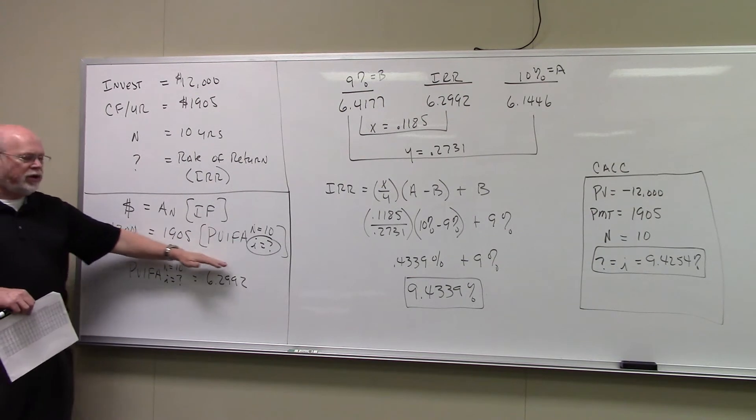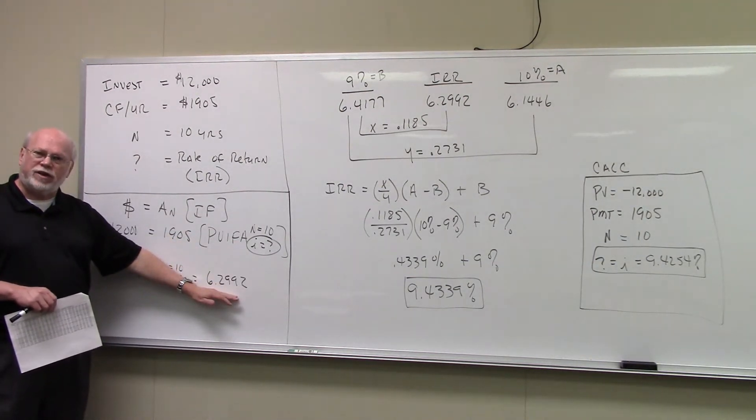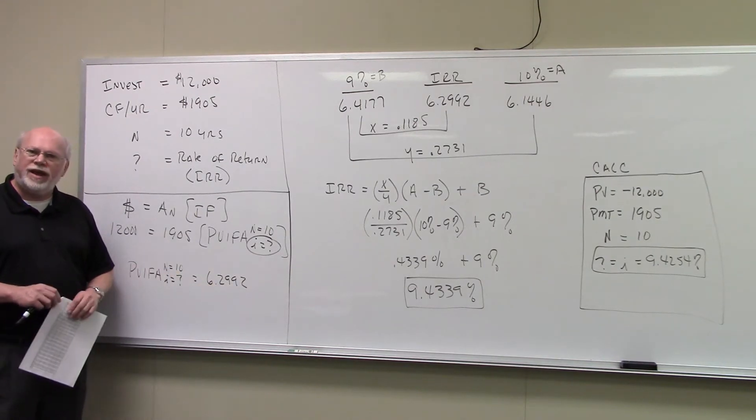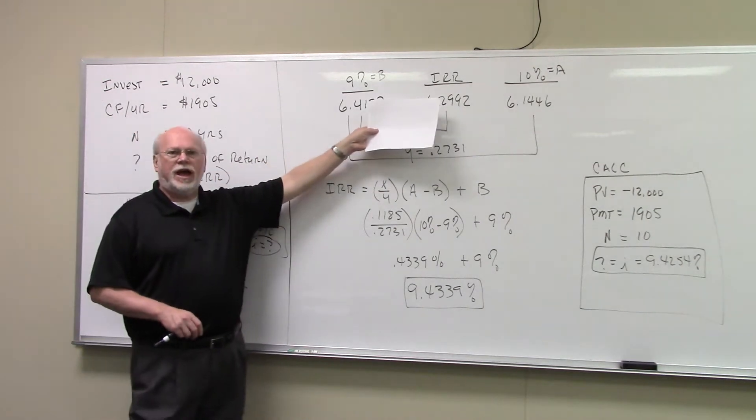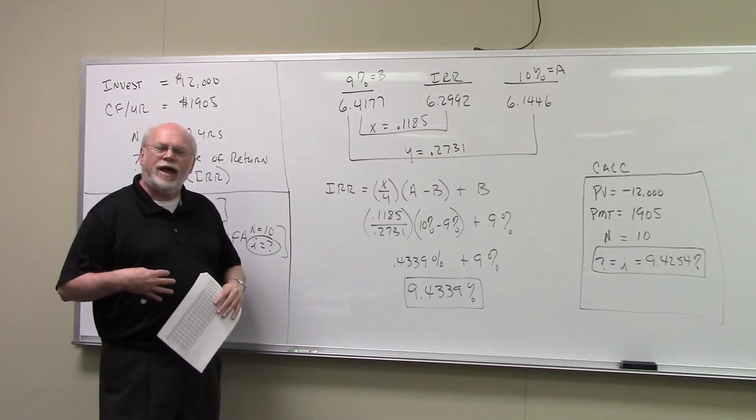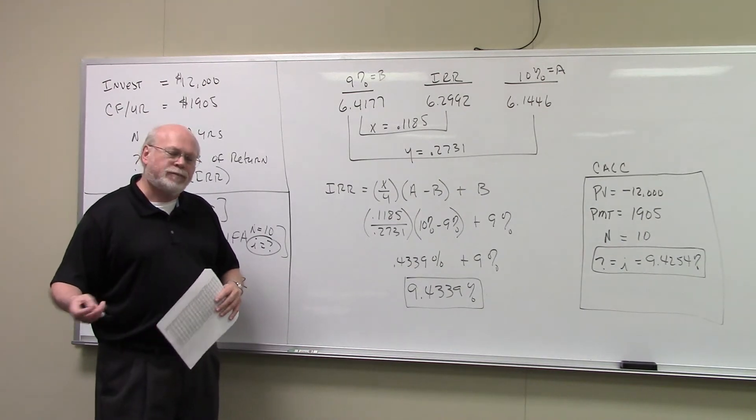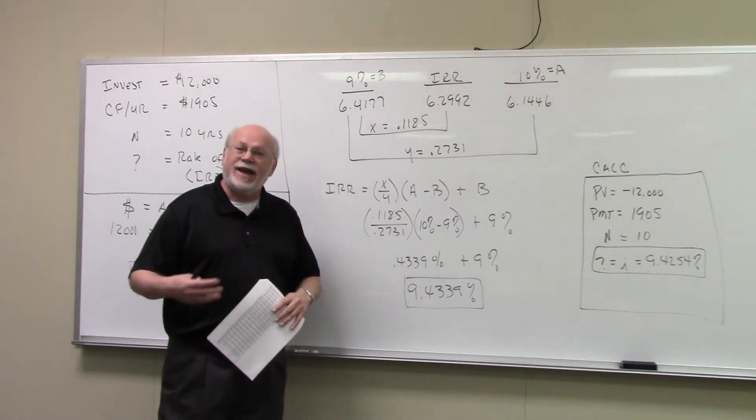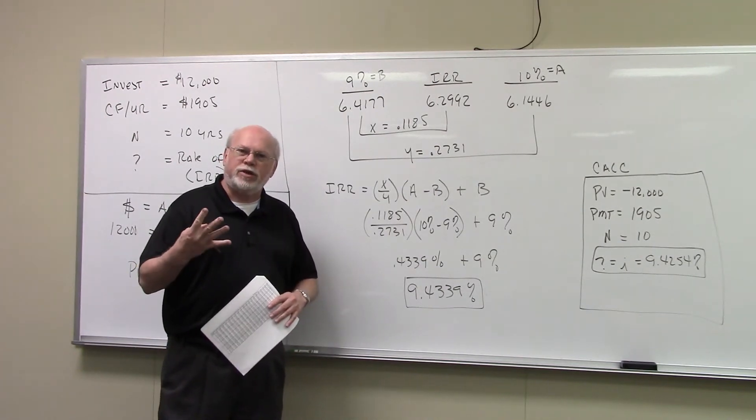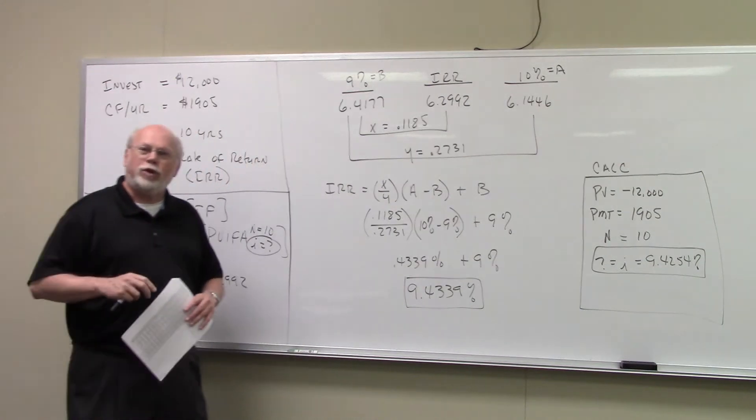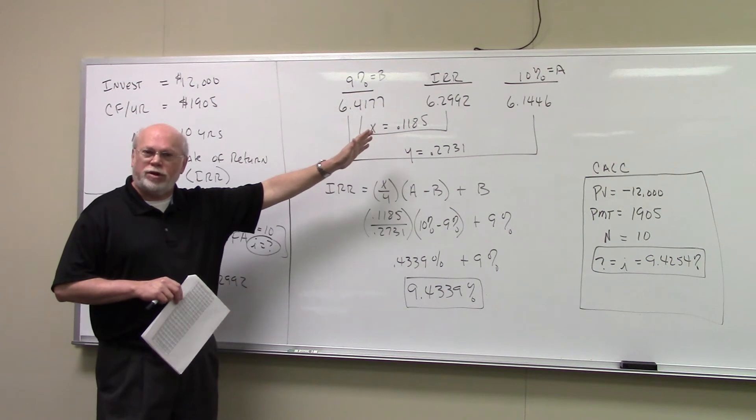Now, whatever the rate of return is, and we don't know that at this point, we do know that the interest factor associated with it is 6.2992. Now what you see up at the top up here, this is what I was taught was the pitchfork approach to interpolation. My professor was a city guy. He thought pitchforks had three prongs. Here in the country, you really know there are four prongs. I wanted to pass the course, so I just went with it. So there's three prongs on this pitchfork.